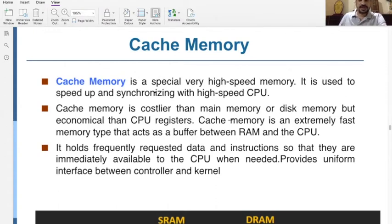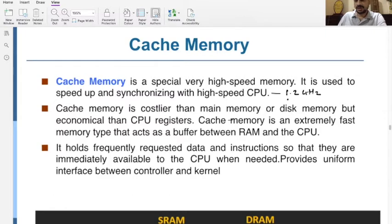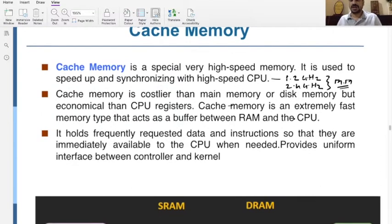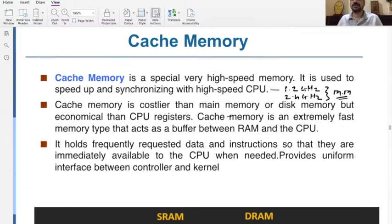Cache memory is a special, very high-speed memory. It is used to speed up and synchronize with the high-speed CPU. The speed of the CPU may be 1.2 GHz or 2.4 GHz. To match this particular speed, the main memory cannot do that — main memory doesn't have the capability to transmit data to the CPU at that high speed. So to match with that, we use another type of memory called cache memory.